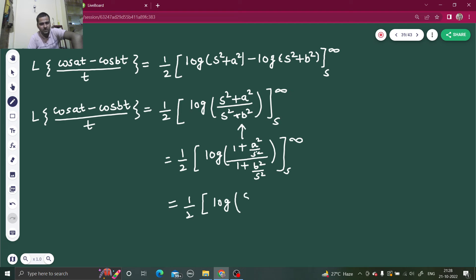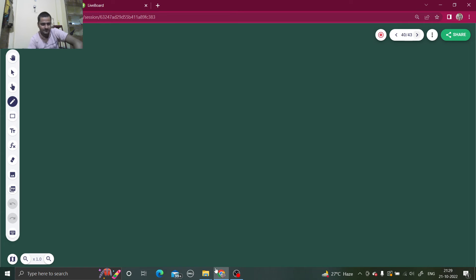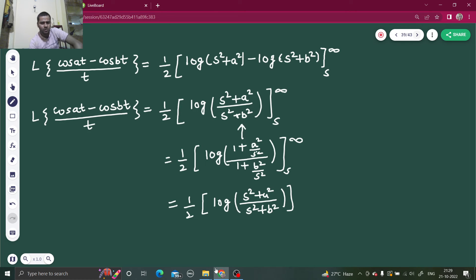Because you are putting s in place of s only, so you will get back this thing only. Fine, so you have obtained this. So LHS by definition what we can write if we have to find this laplace transform by definition you would have written this as integral from 0 to infinity e power minus st and whatever was the function you would have pasted that, so cos at minus cos bt by t.